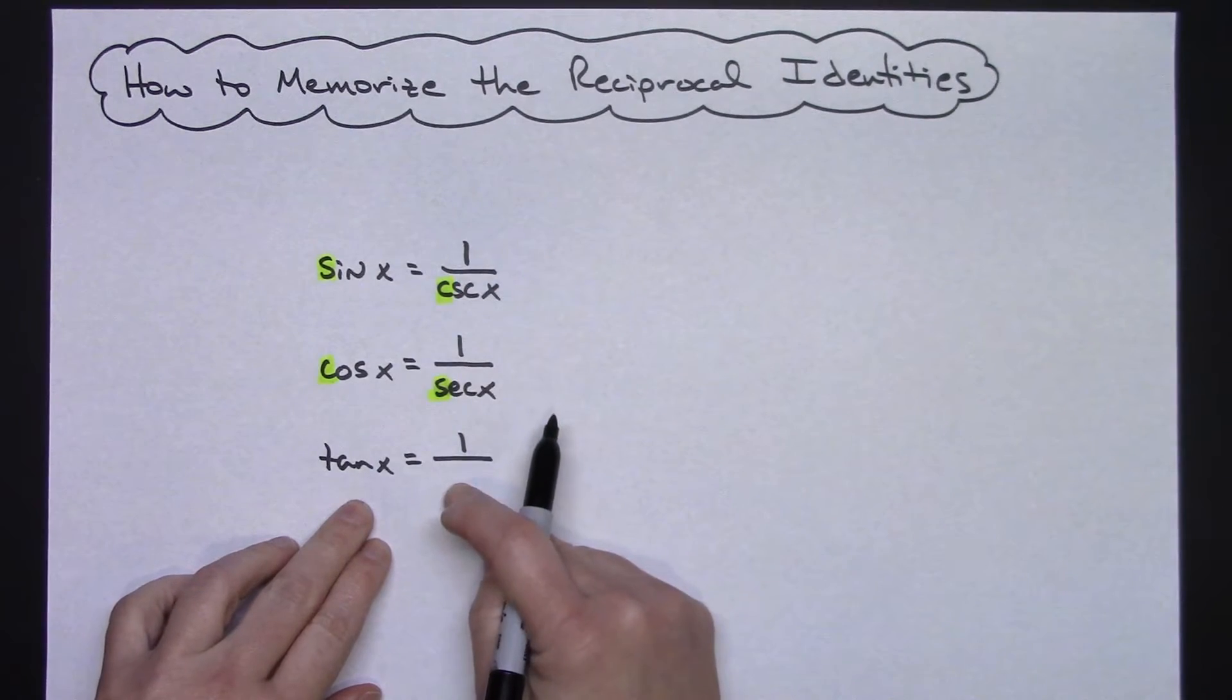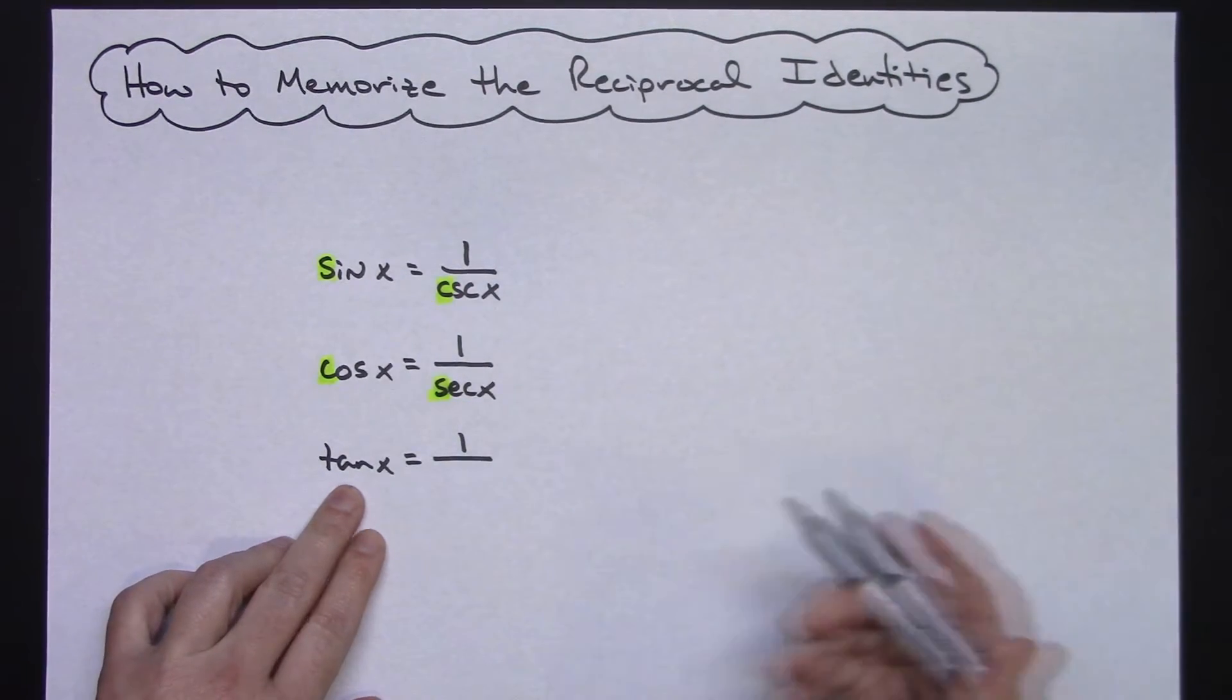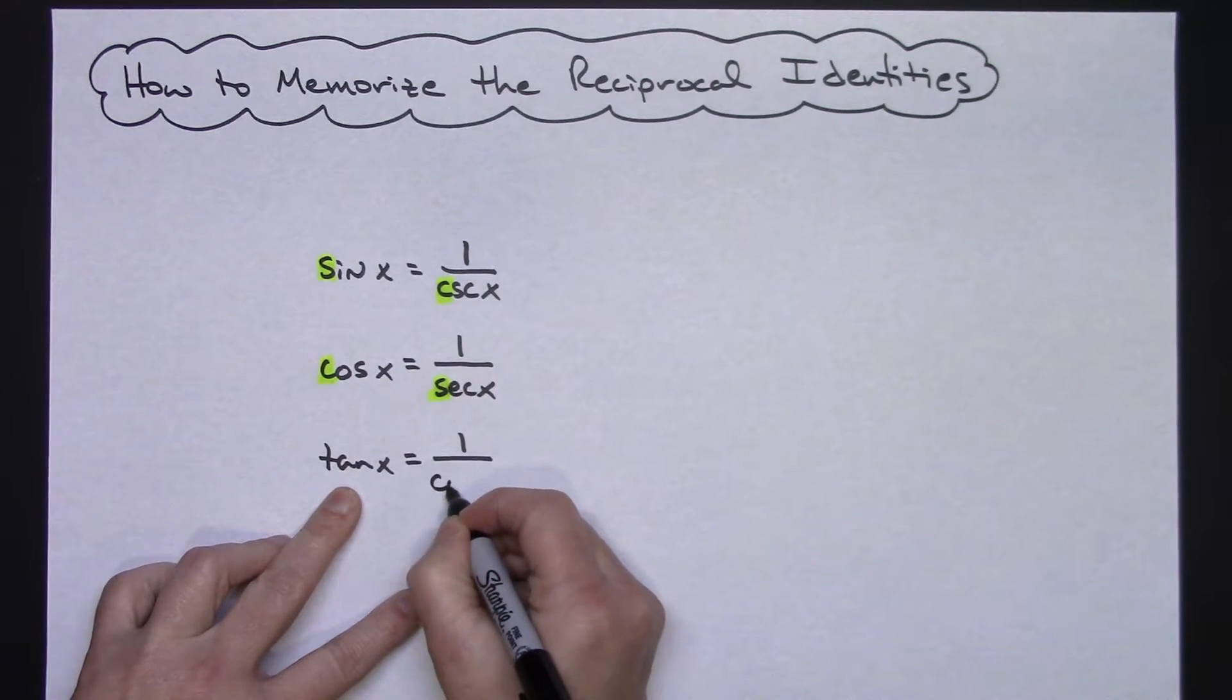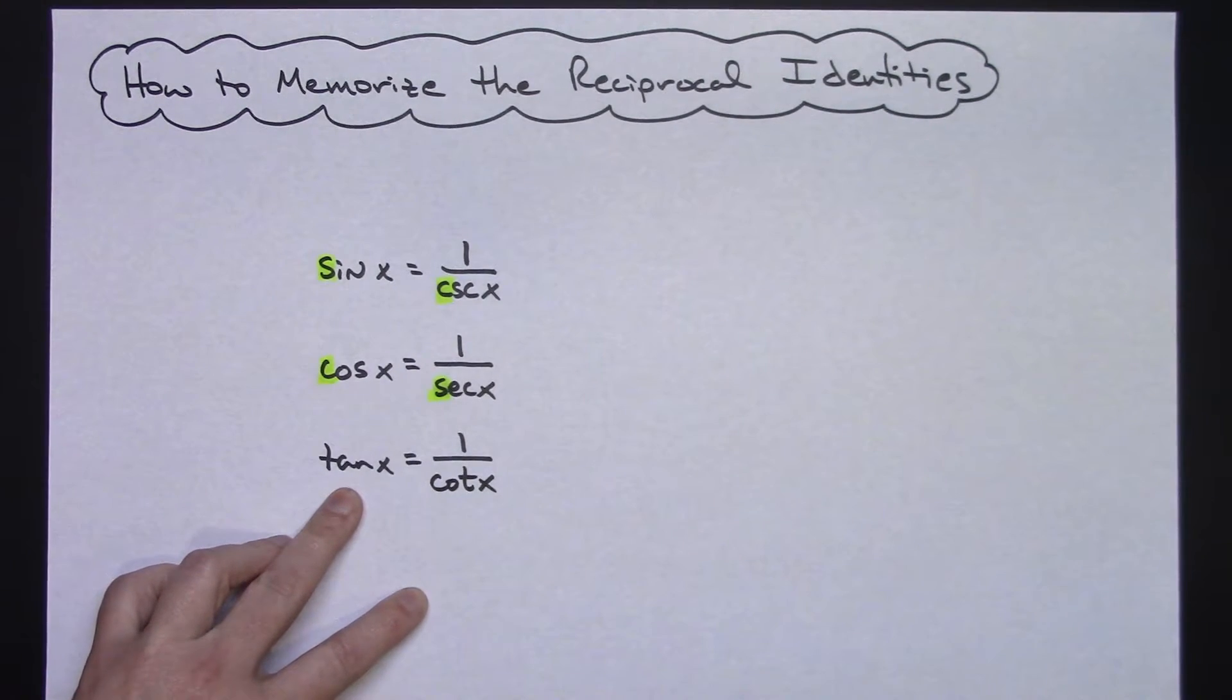If these are always my co-functions and this is tangent, tangent's co-function is cotangent. So that one's not hard to remember at all.